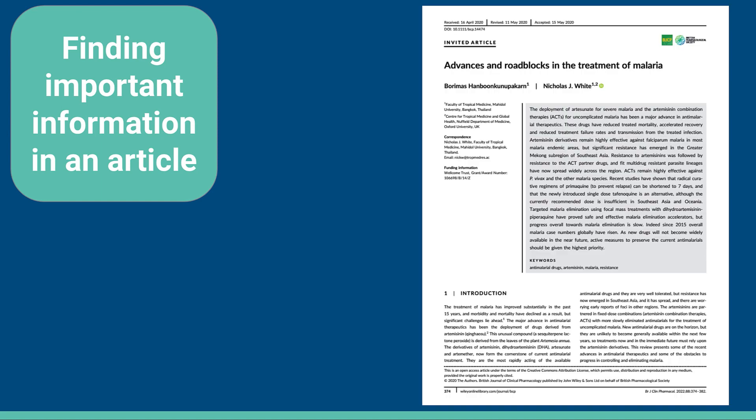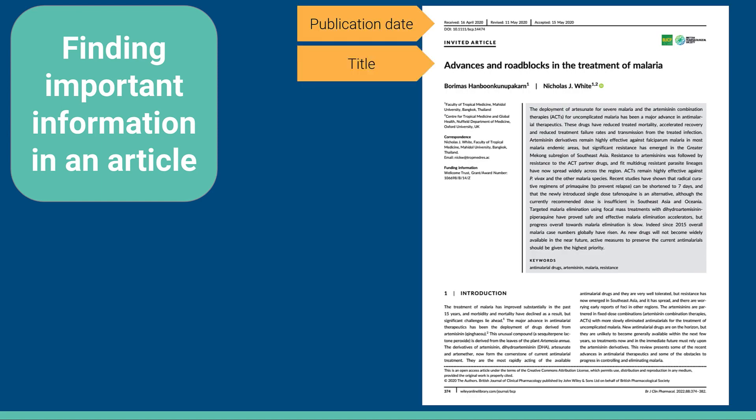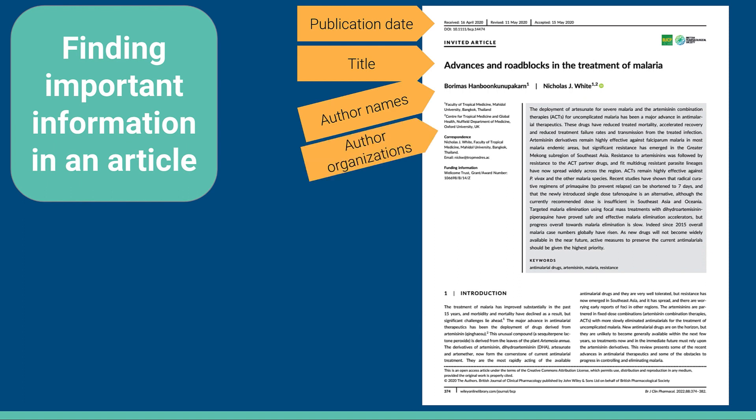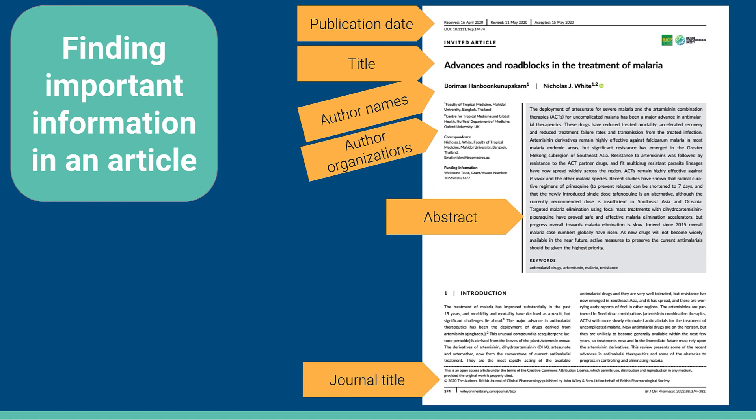Finding important information in an article — let's review. Here is a paper. I've got the publication date, the title, the author names, the author organizations — I can see where they work. The abstract is a quick summary. And the journal title — I can see if the journal is a well-respected journal or maybe less respected.